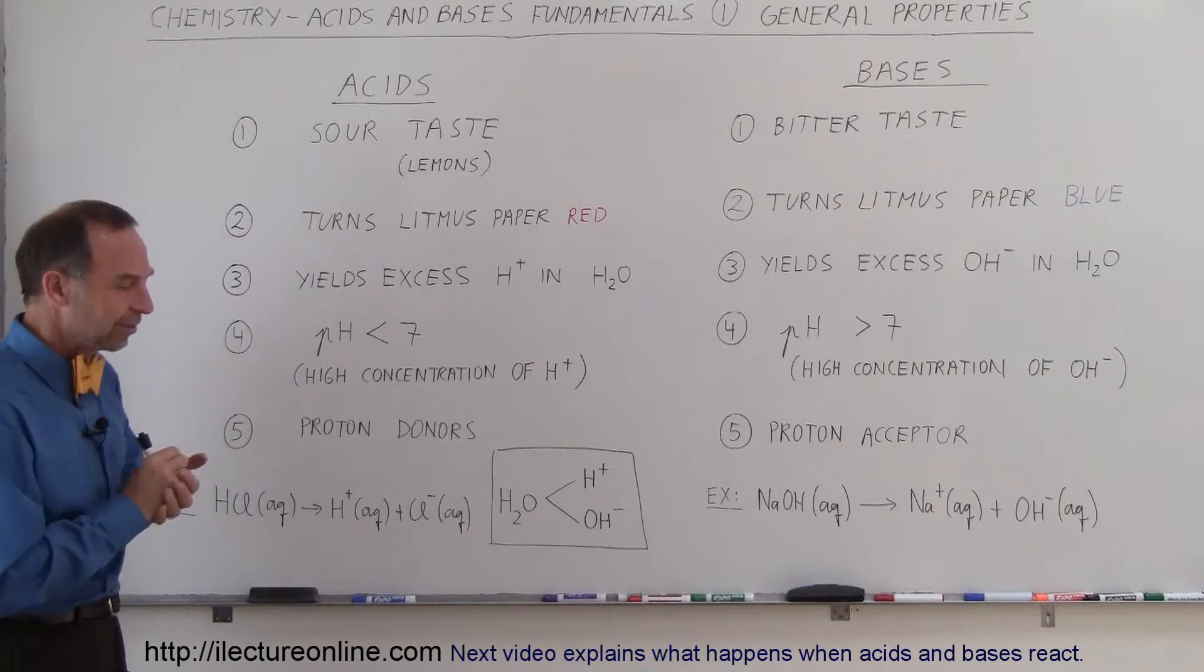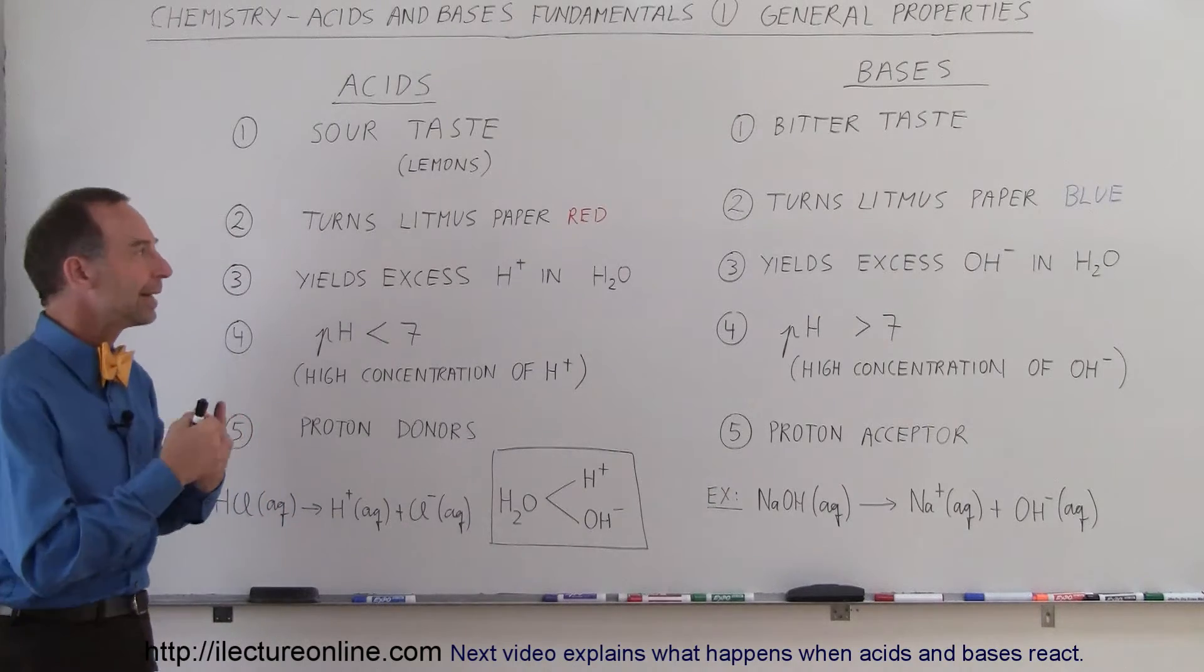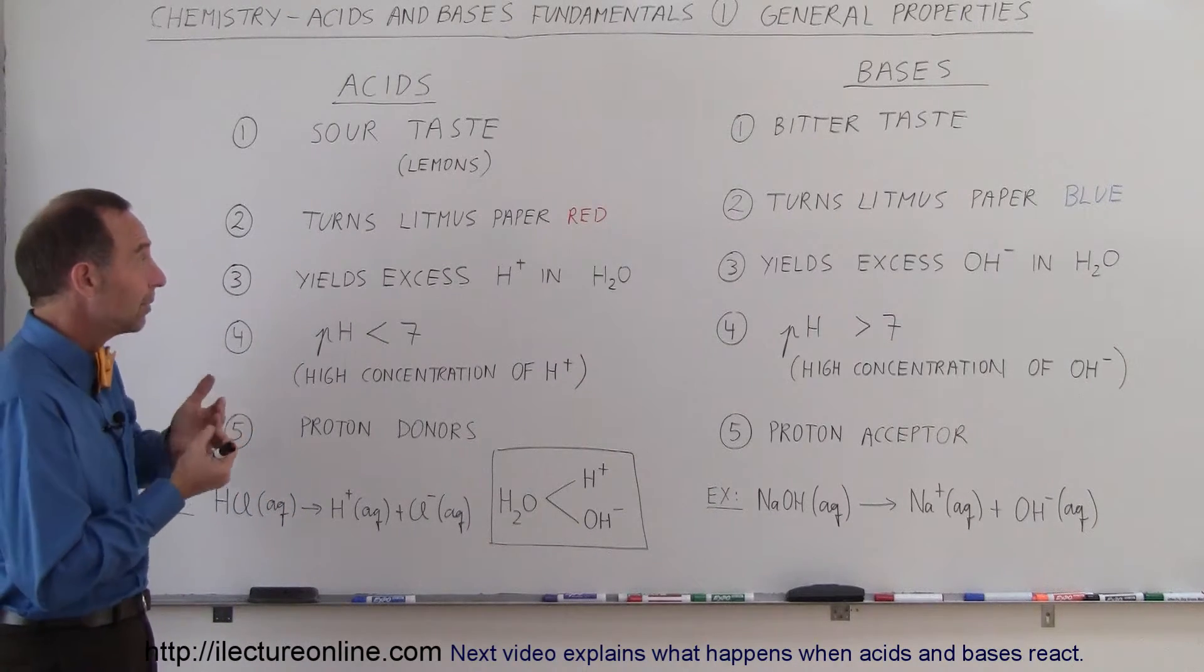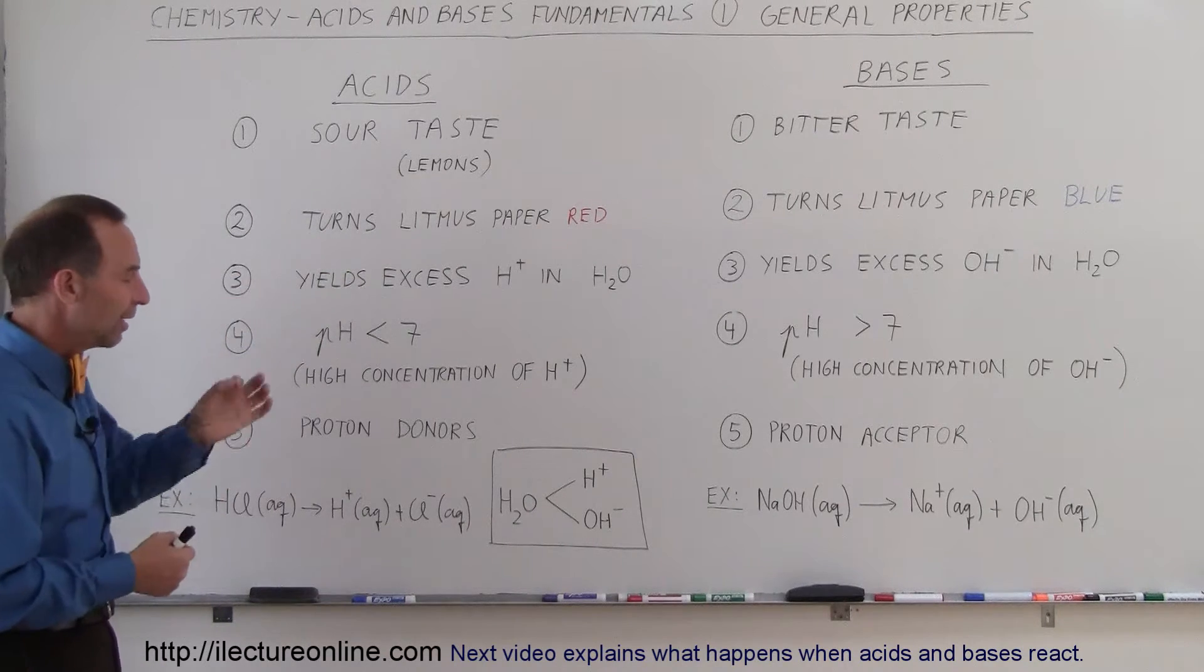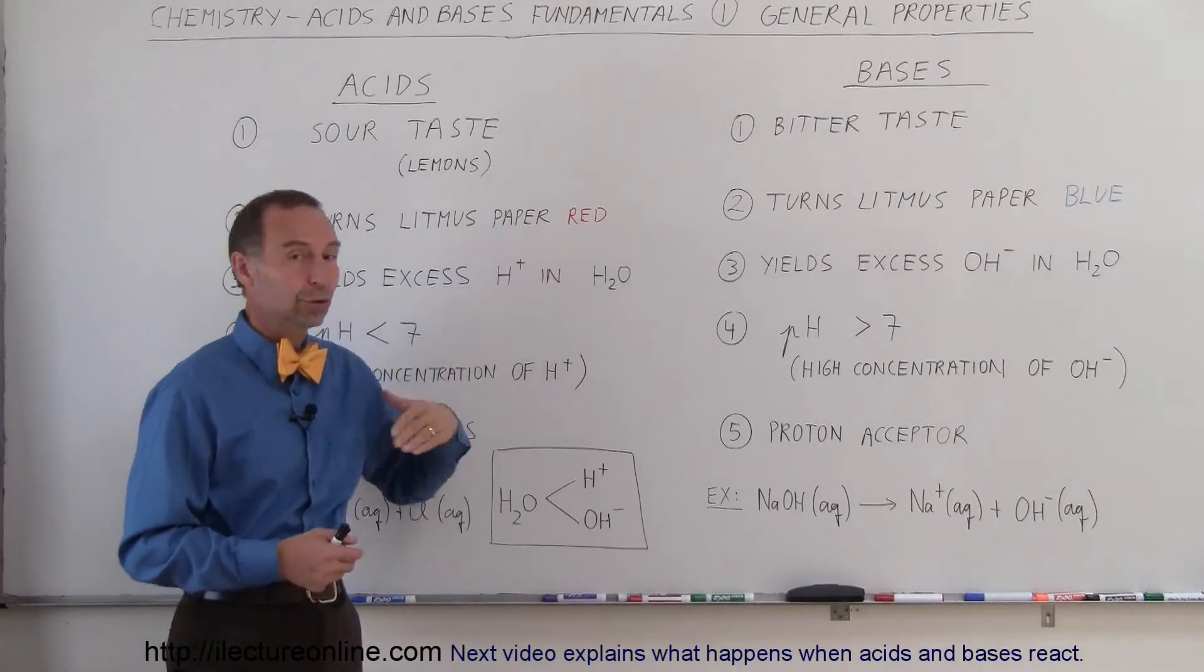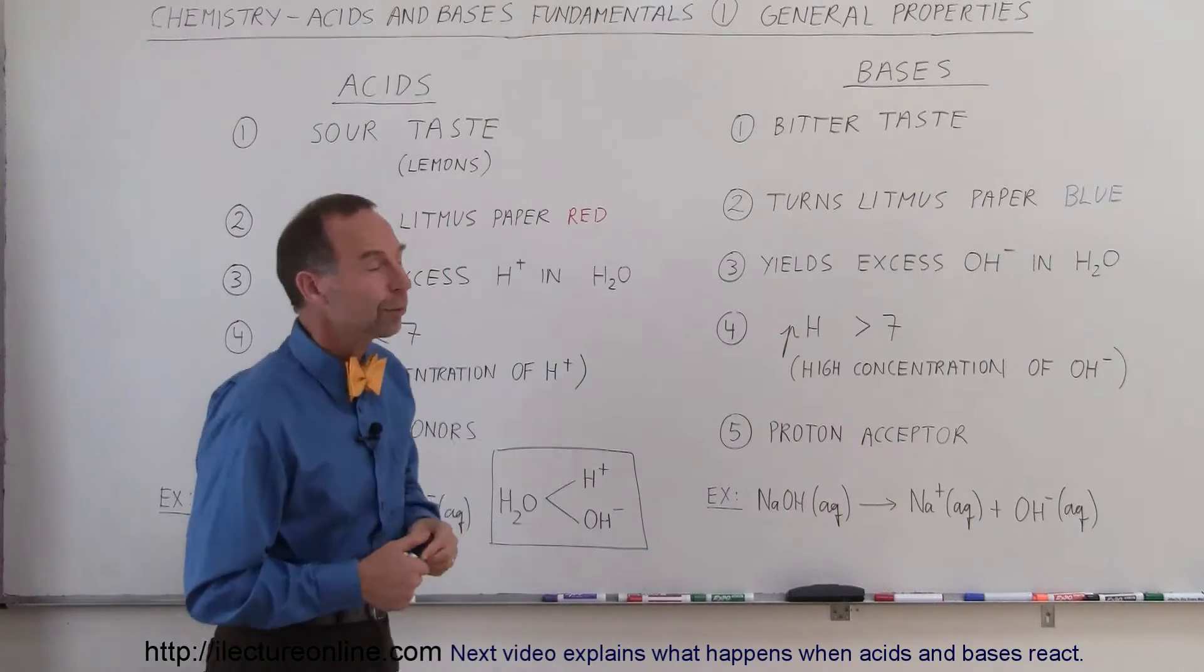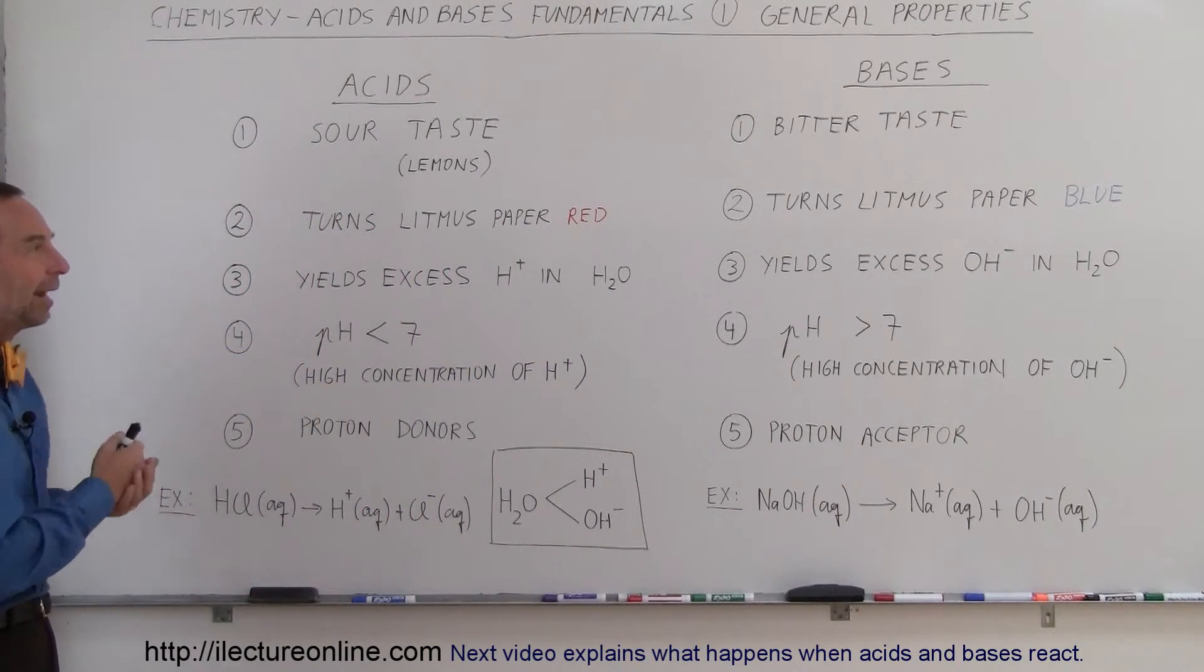Okay, the second one is that we have certain dyes that we can use on paper, like litmus paper, and we can test acids and bases with litmus paper. If you dunk litmus paper into an acid, the litmus paper will turn red. And if you dunk it into a base, then it will turn blue. So that's one good way of indicating whether or not you're dealing with an acid or a base.